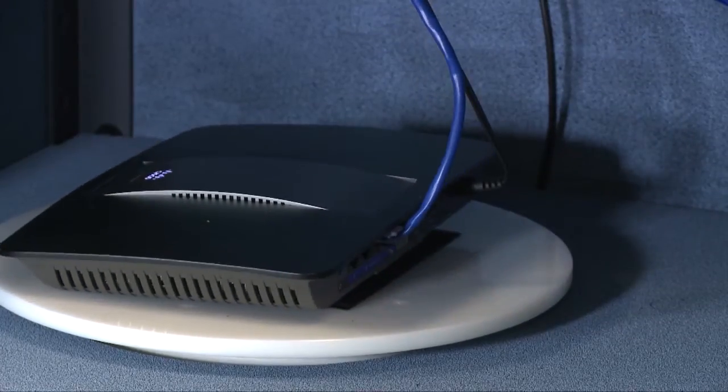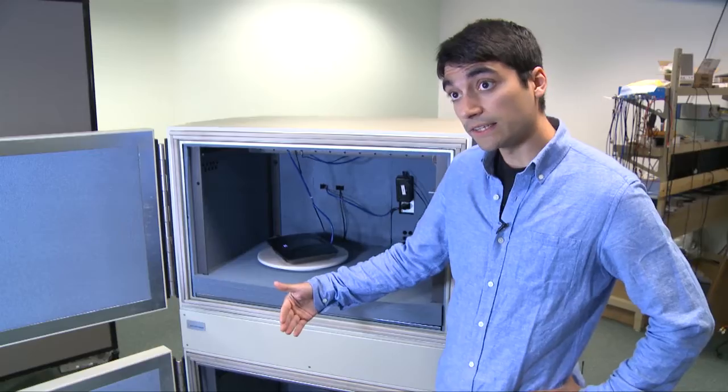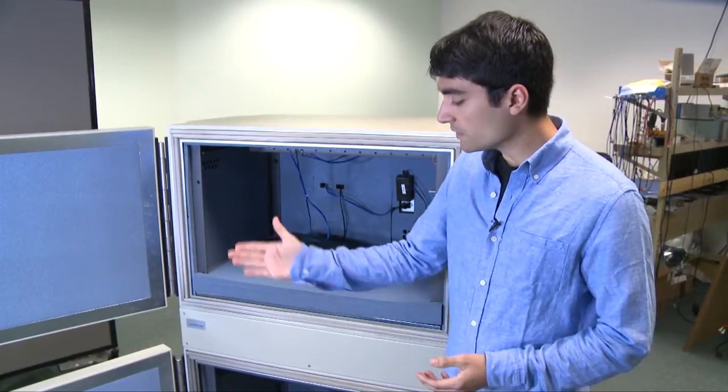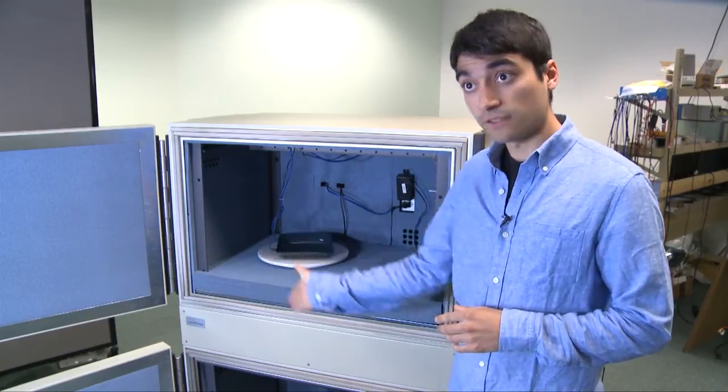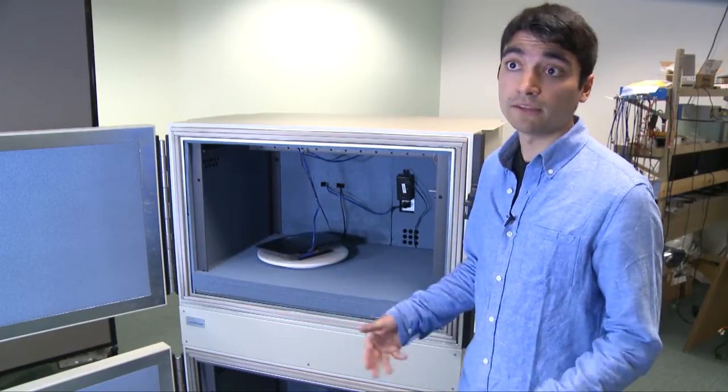So we have a wireless access point on the Octoscope turntable, and what this allows us to do is rotate the access point during a test. So there's two different modes. We could set a position and run a throughput test, or we can rotate during the test, and in doing so we can get throughput measurements independent of orientation.